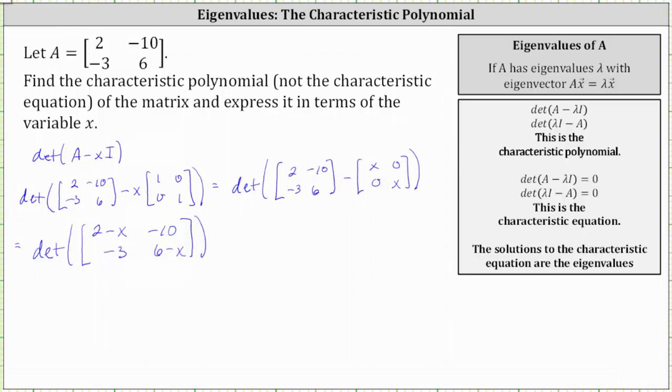And now we find the determinant. The determinant is equal to the product of two minus x and six minus x minus the product of negative 10 and negative three.